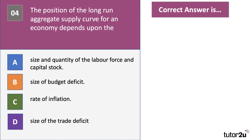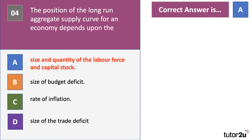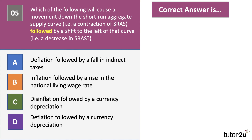The best answer is A — the size and quantity of the labour force and the size and quantity of the capital stock. Options B and D drive aggregate demand rather than aggregate supply. Inflation could affect short run supply through cost inflation, but not long run aggregate supply.